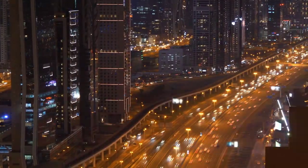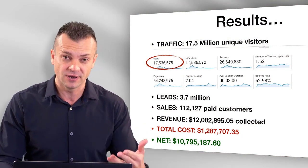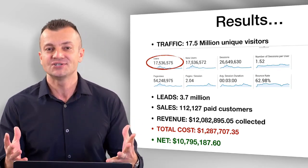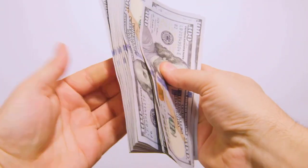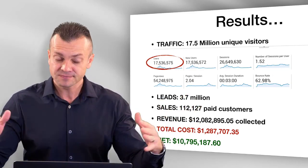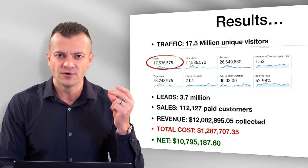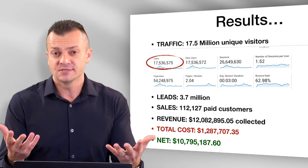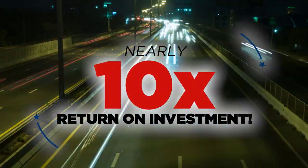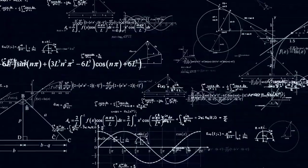That crowd of 3.7 million leads produced over 112,000 paid customers and over $12 million in revenue. Now the big question is: did it cost a fortune? Let's do the math. Over 36 months, we generated over 450,000 visitors every 30 days like clockwork. It cost us $1.2 million to run this campaign. However, the return on investment was almost 10x — generating a net profit of over $10 million.